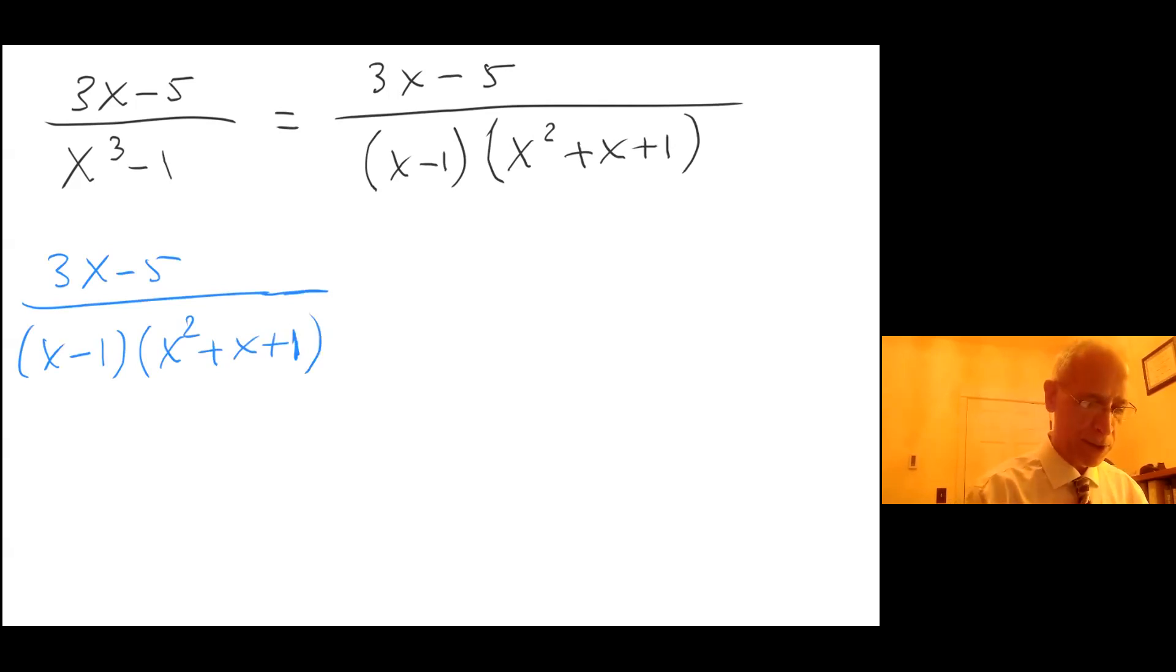So we are told that this breaks down to A over (x minus 1) plus—here instead of B we have Bx plus C since we have a quadratic in the denominator—over x squared plus x plus 1. We are not going to question why, we are just going to accept it for now and solve for A, B, and C.